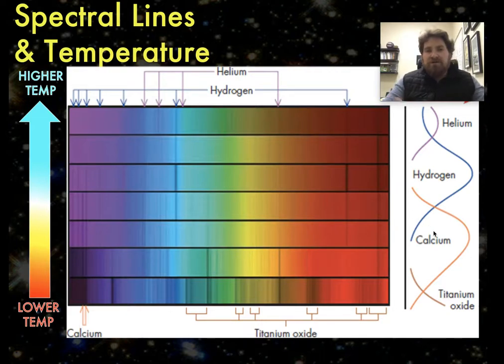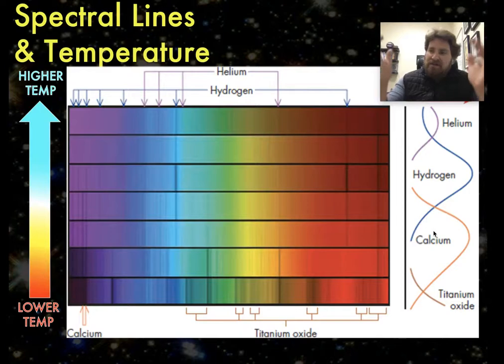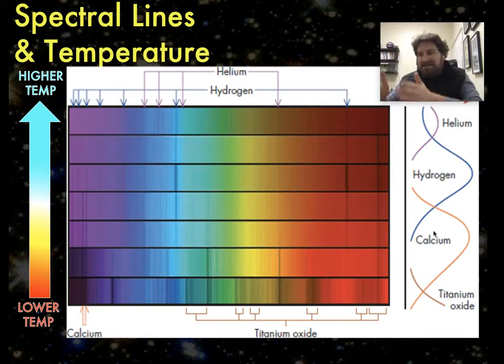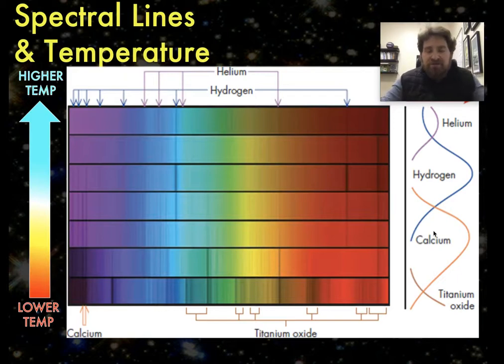Well, astronomers going back 100 to 150 years or so, including a very famous one named Annie Jump Cannon, identified that these spectral patterns can be used to classify stars by the type of spectra that they give off. And that spectrum is in turn related to the temperature of a star.